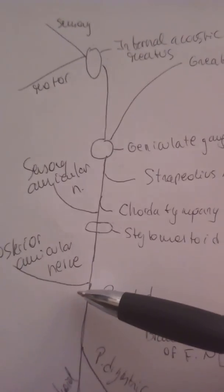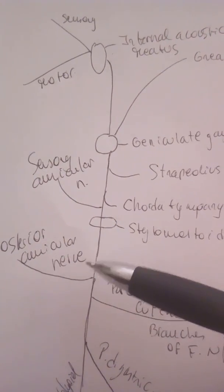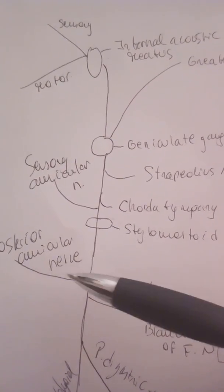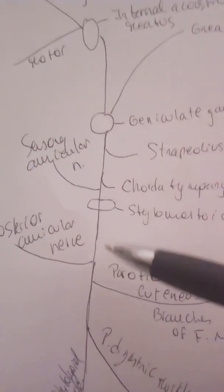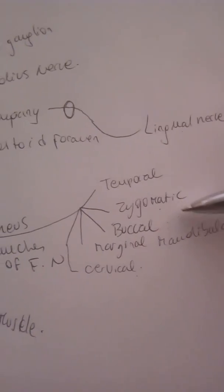It will give the posterior auricular nerve that is also motor to the occipital belly of the occipitofrontalis. And then we'll give the parotid cutaneous branches of the facial nerve. So it's five of them.